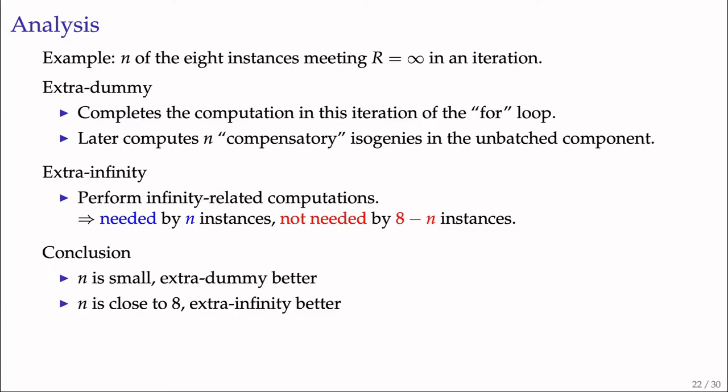Now let's turn to the third approach. Before introducing it, we give more details on the extra-dummy and extra-infinity methods. Consider an example where in an iteration of the inner for loop, n of the eight kernel points R are infinity. The extra-dummy method completes computations of this iteration and later computes n compensatory isogenies with the unbatched component. On the other hand, the extra-infinity method enters its else branch to compute scalar multiplication for all eight instances, and may later perform other infinity-related computations needed by n instances. We observe the extra-dummy method handles infinity cases more efficiently when n is small, while when n is close to 8, the extra-infinity method seems more efficient.